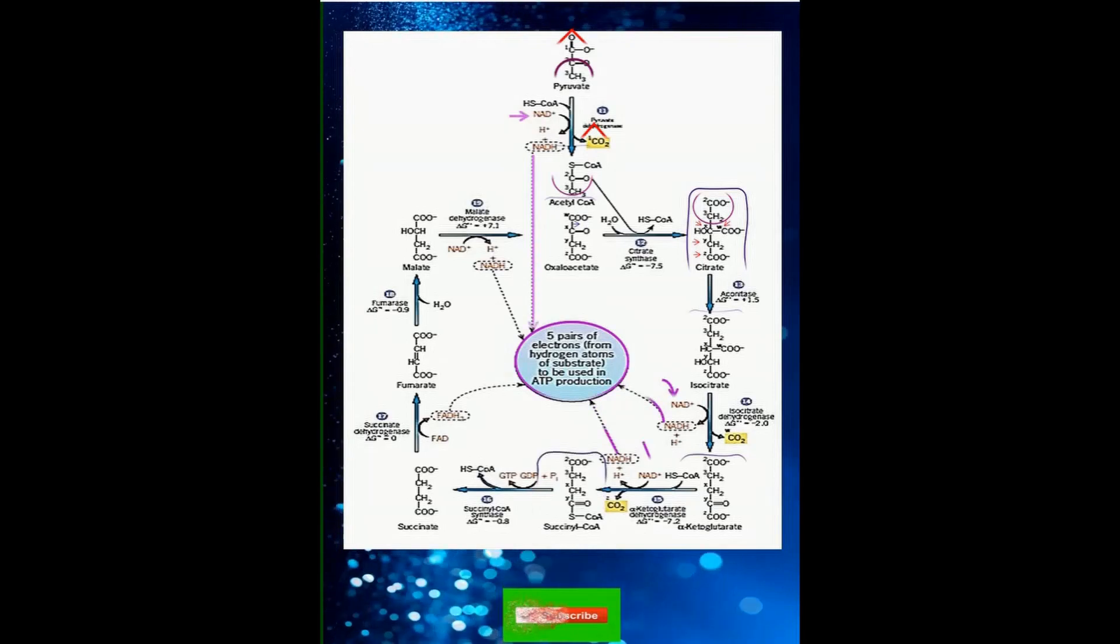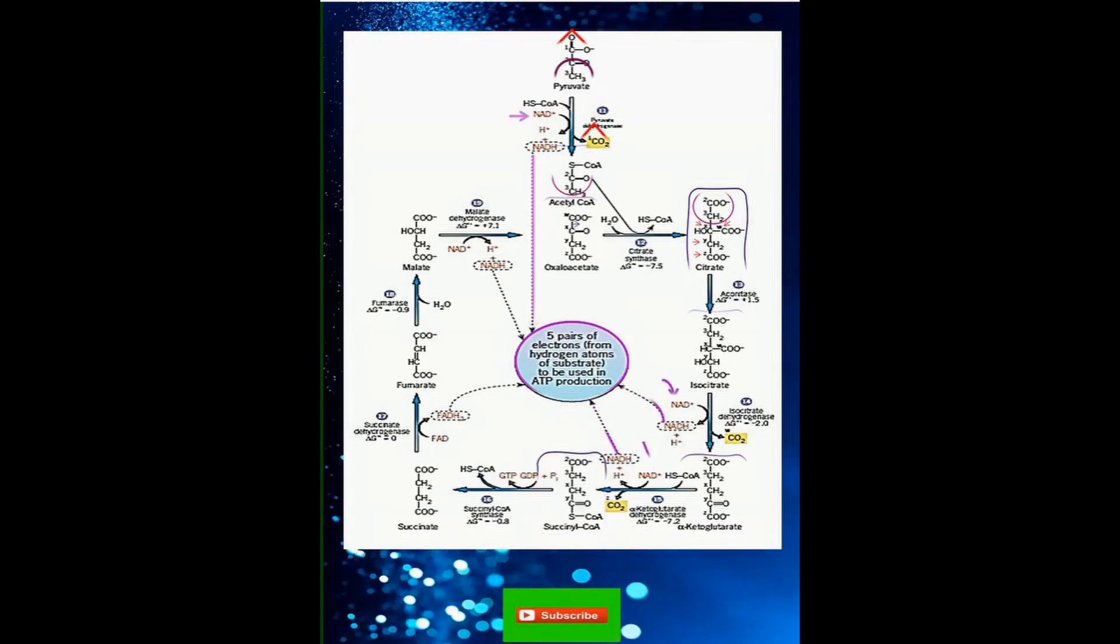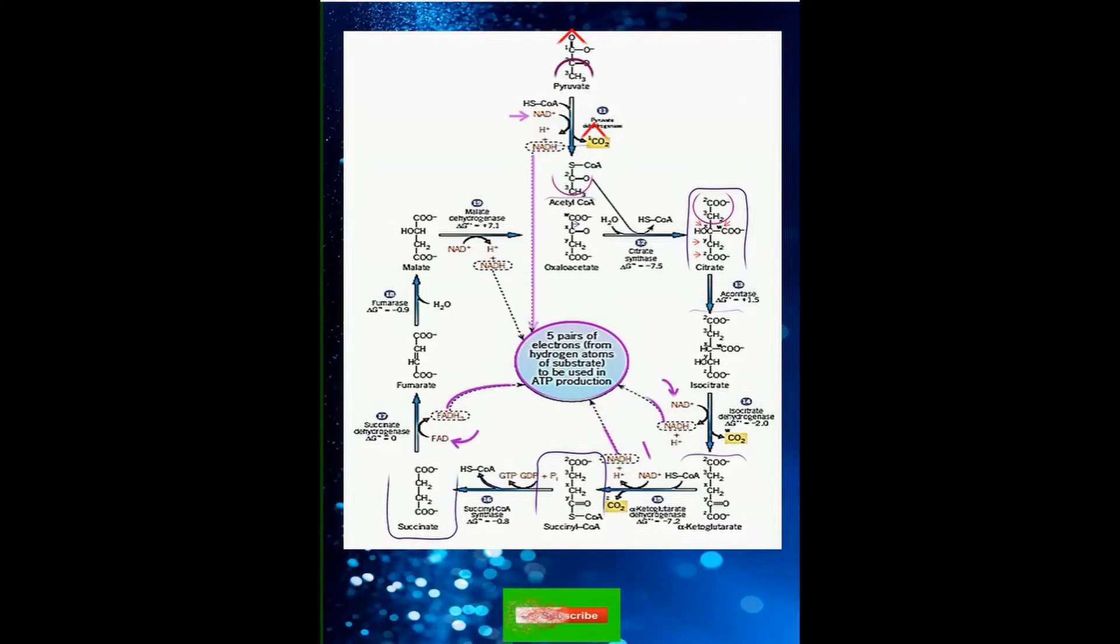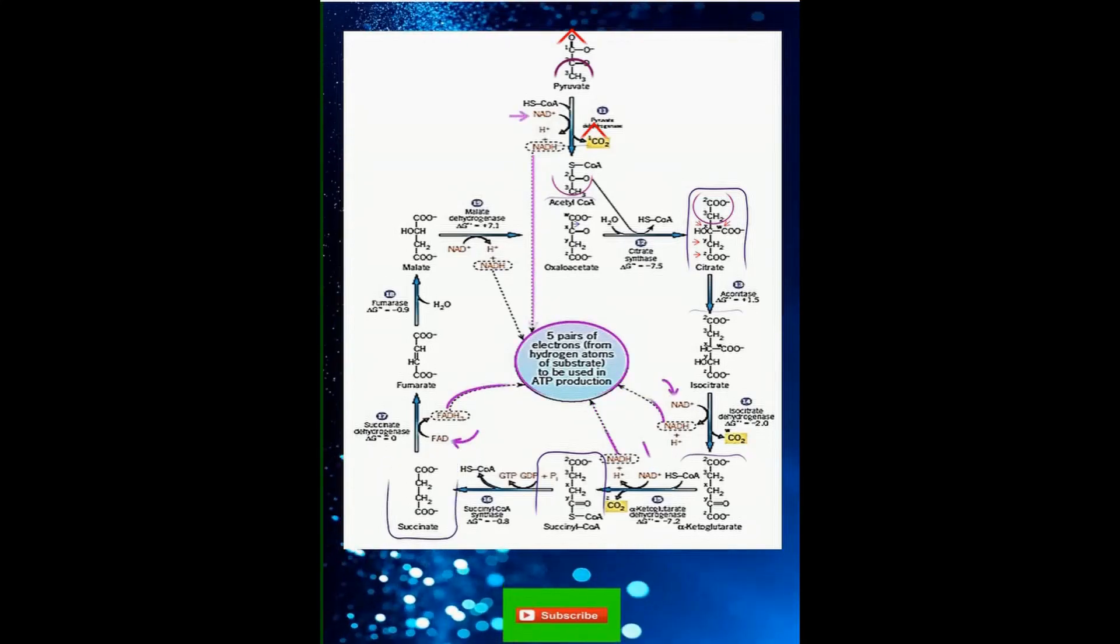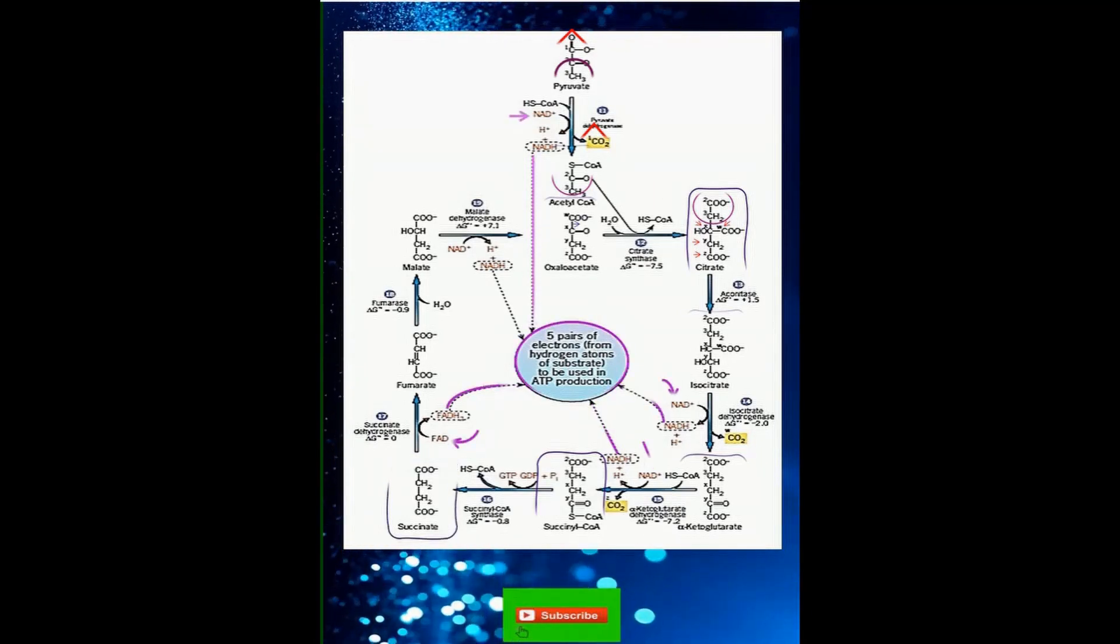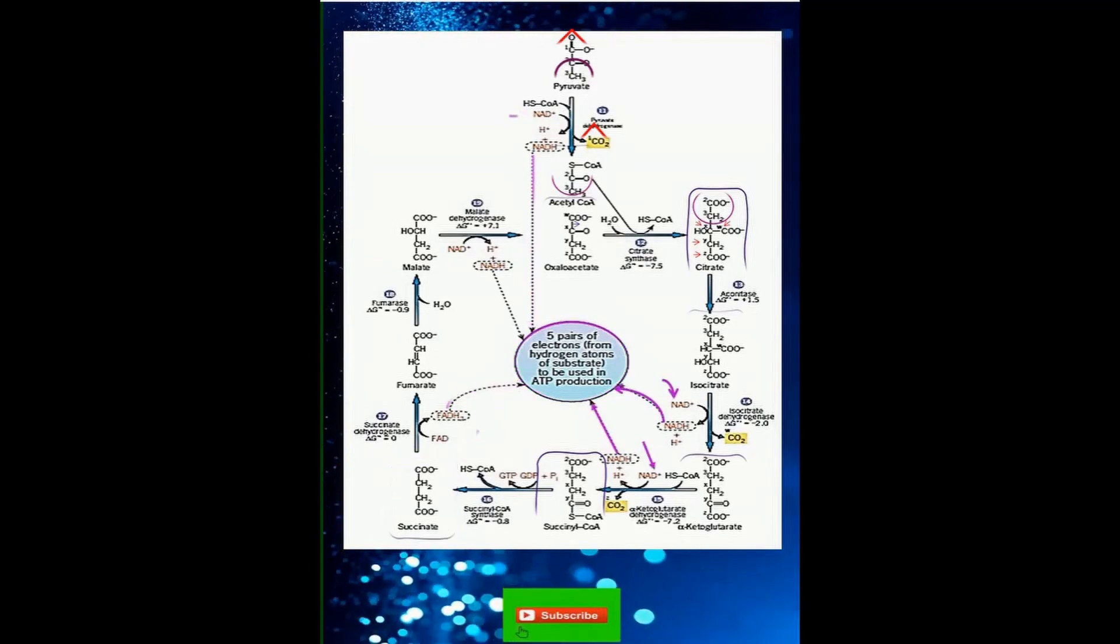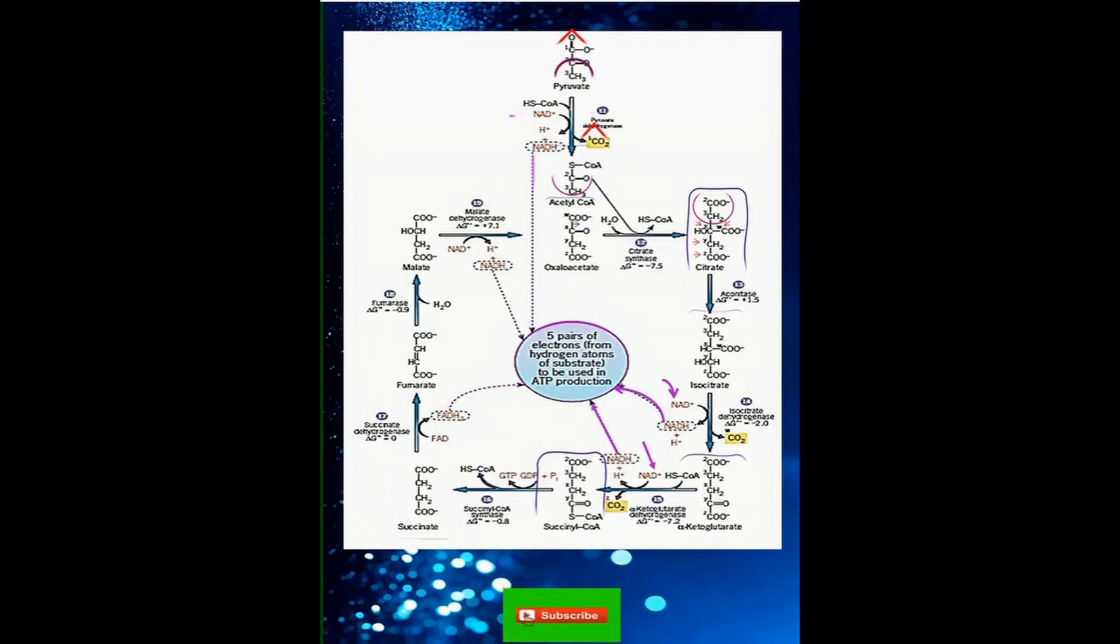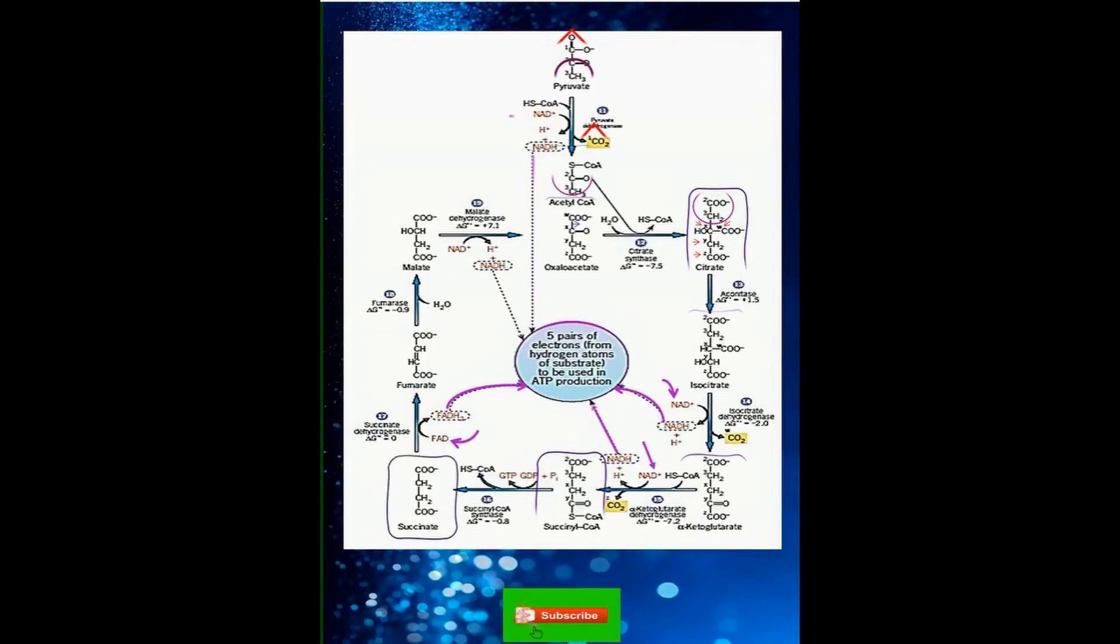The sixth step is catalyzed by succinate dehydrogenase. With the carbons removed, the rearrangement process begins manipulating the hydrogen. When the succinate dehydrogenase links to the substrate, it releases two hydrogen atoms attaching to the carrier ubiquinone or FAD, flavin adenine dinucleotide, with the additional two electrons which is then transferred to power the electron transport chain.